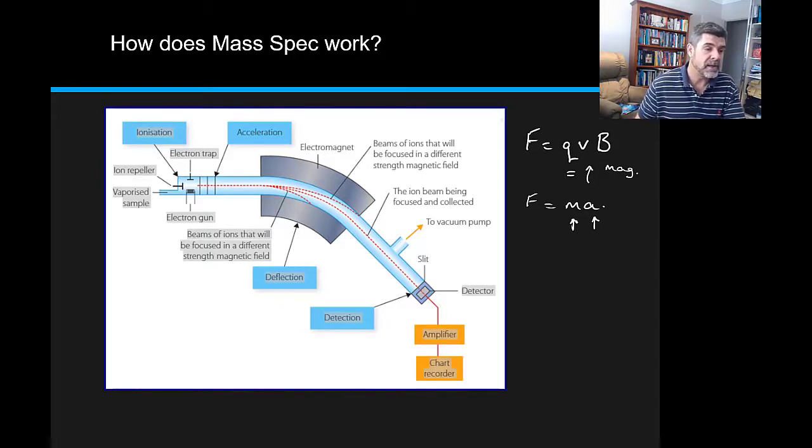We're going to create a charged particle. That charged particle is then going to be accelerated, so it'll move relatively quickly through an electromagnet.